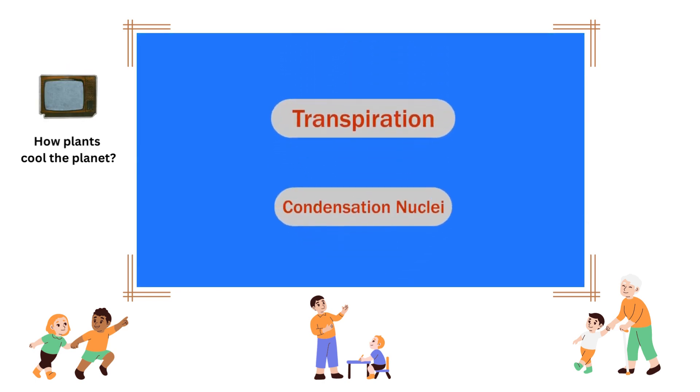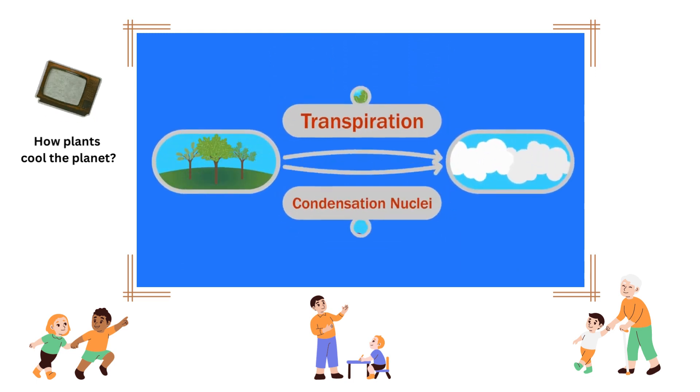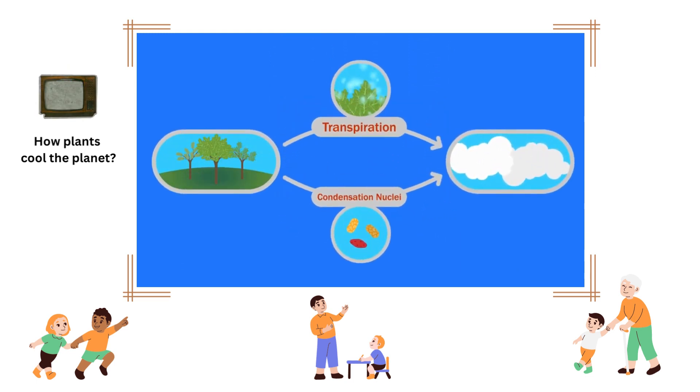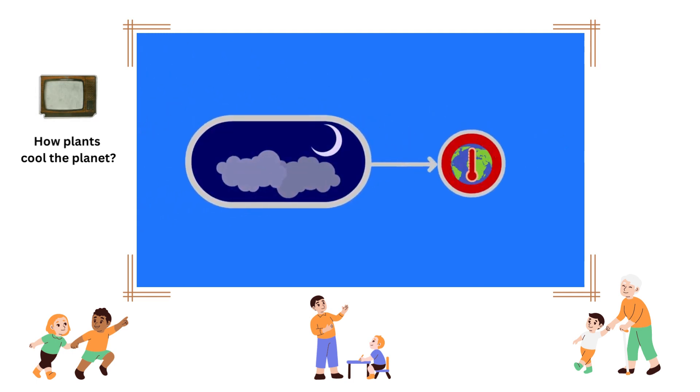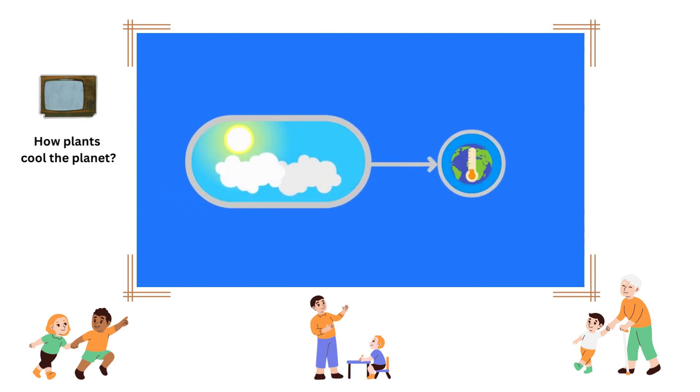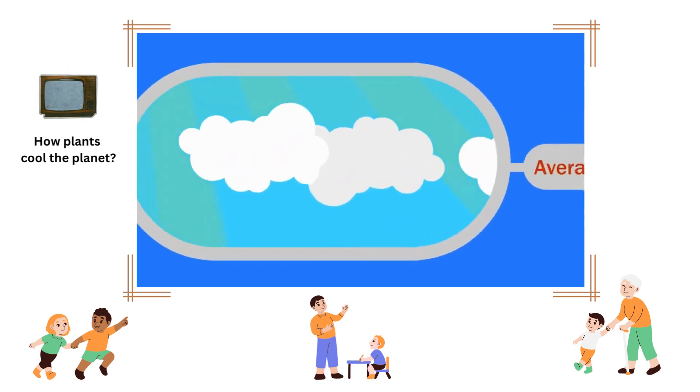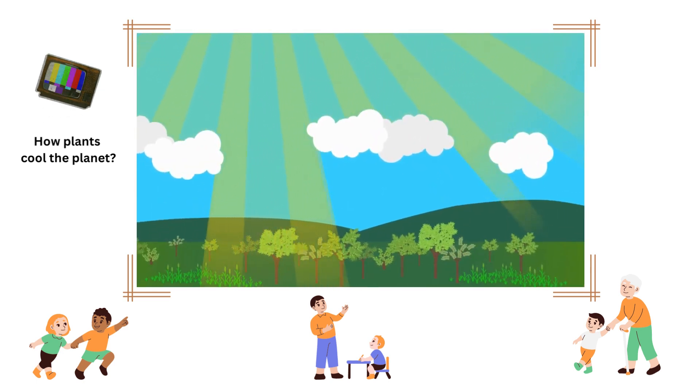So we know from the previous two points that more plants means more clouds, because of the transpiration and the condensation nuclei. While clouds have all kinds of warming and cooling effects depending on various conditions, on average we get a net cooling effect. Overall, more clouds means a cooler atmosphere, because clouds reflect sunlight.